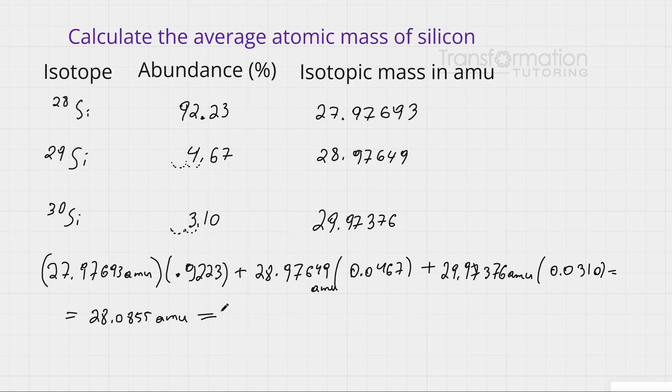That means we need to round our answer to three significant figures, so our answer will become 28.1. The reason we round up is because after the zero we have eight. If the number is five or bigger, we round up, so we get 28.1 amu.